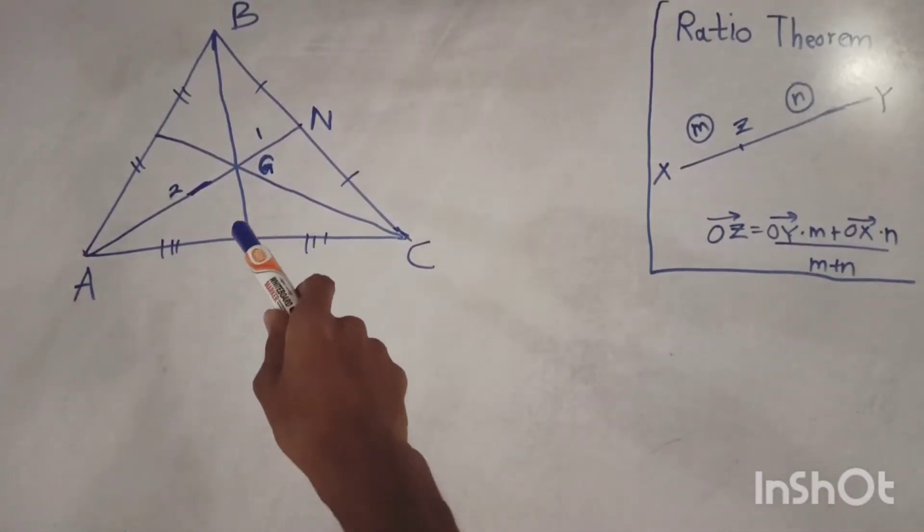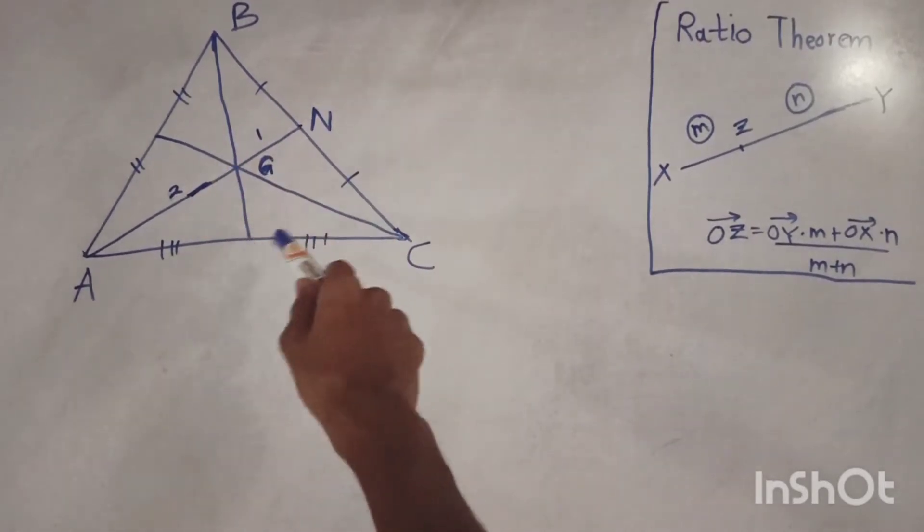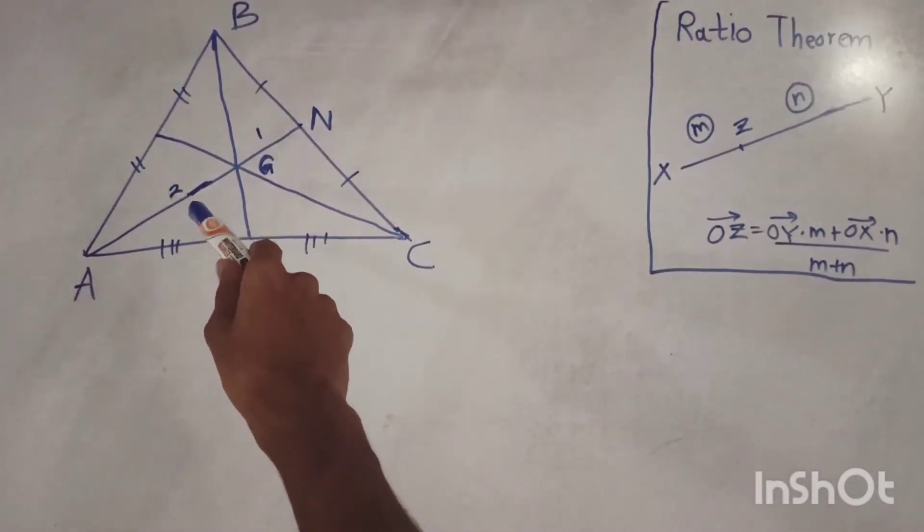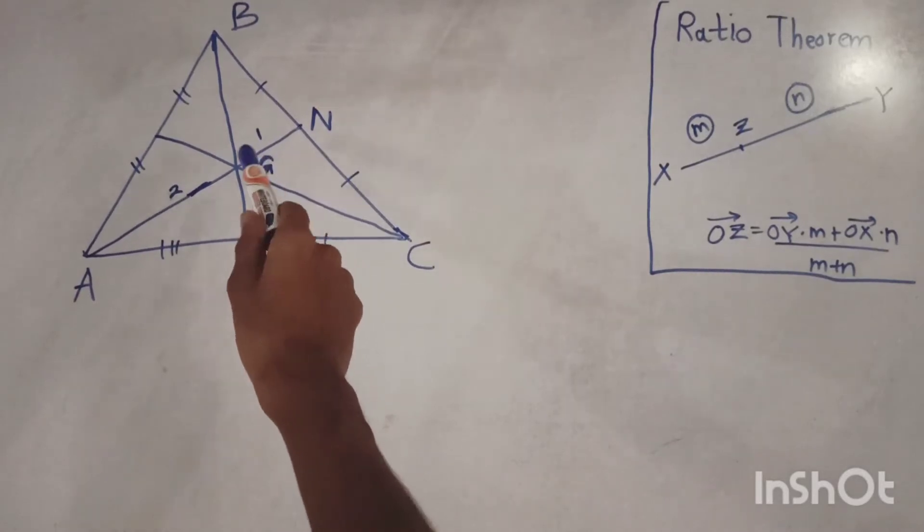The three medians of the triangle intersect in a ratio of 2 is to 1 to form the point centroid g.